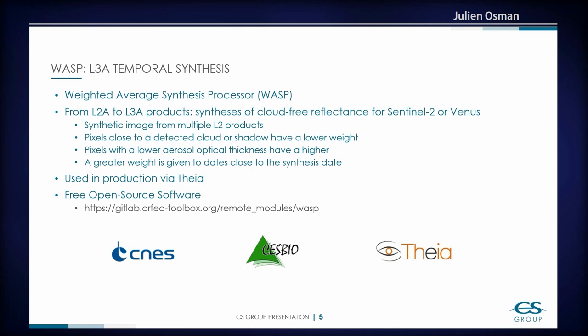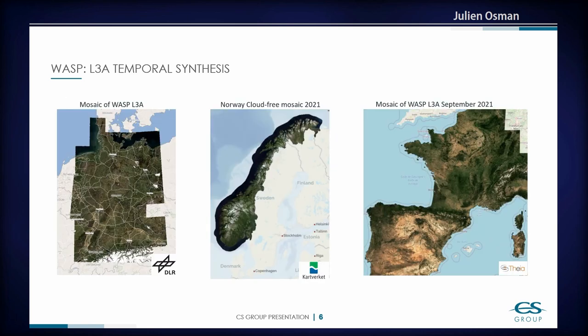You can find it on the GitLab of the Orfeo Toolbox. Here are some examples of results over Germany, Norway, France, and Spain. Those are not direct satellite images — they are syntheses, the compilation of a time series of images, and the clouds have been removed. On the image over France and Spain, you can see it's a lot of green and some yellow. If you go to the THEIA platform and see the image generated for last month, you will see that the green kind of disappeared and the yellow takes a lot more space now, which is kind of scary.